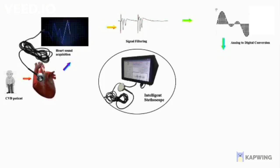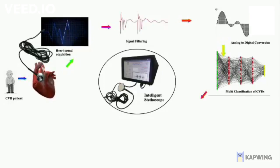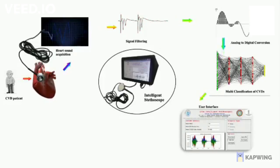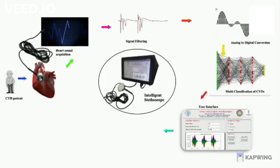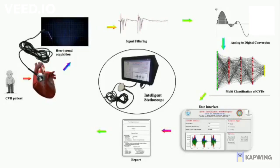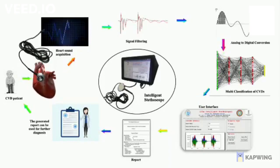A deep learning-based convolutional neural network model is used to minimize the misclassification of multi-cardio disorders. CNN improves the performance of multi-classification with low computational demand. The device also has a graphical user interface (GUI) on which patient details can be entered, and it generates a report stating the patient's heart condition, which can be used for further diagnosing.